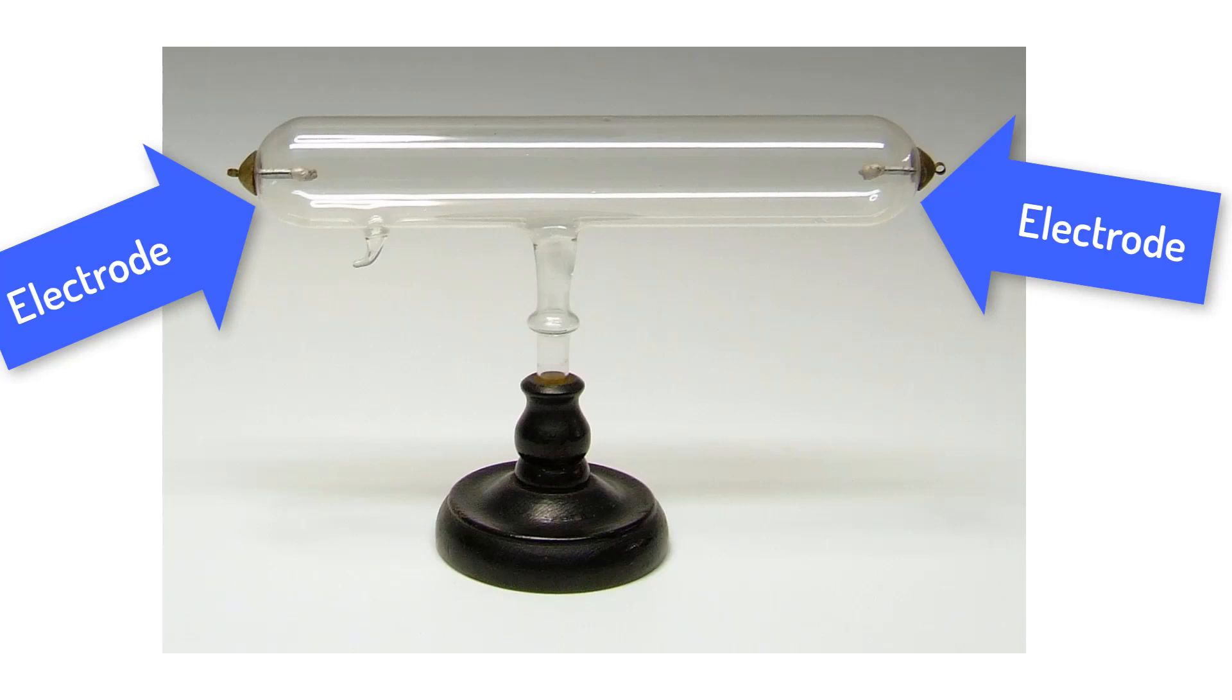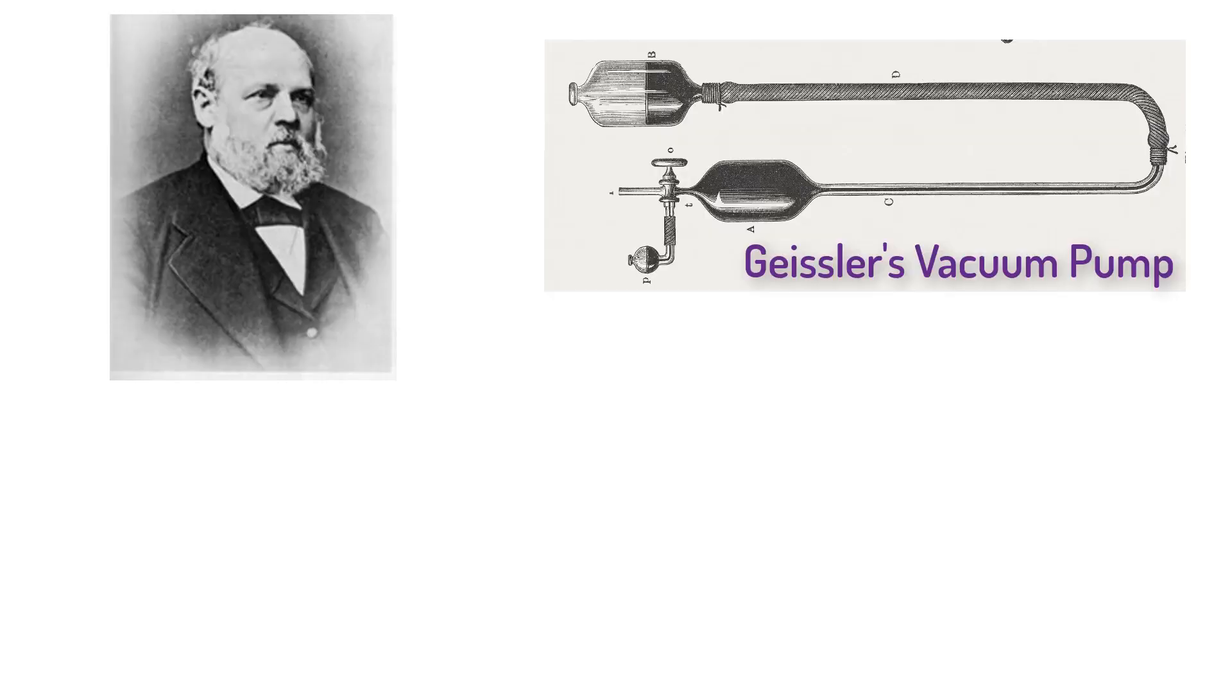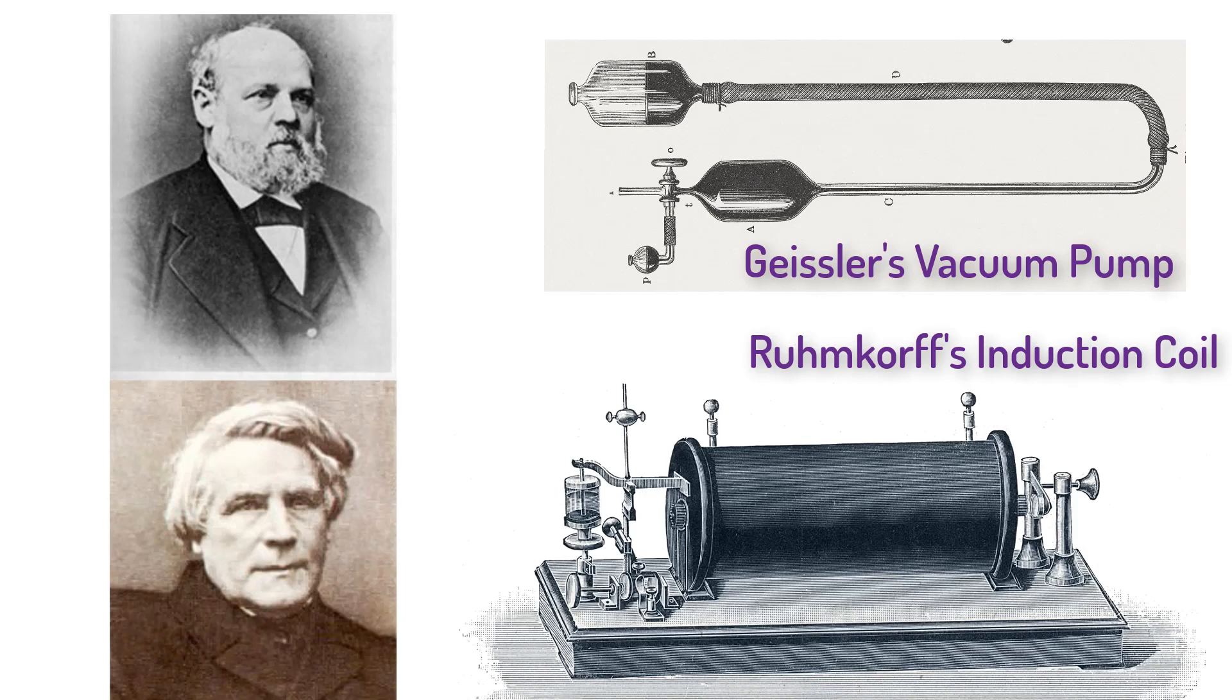Geissler tubes started pretty simply. They were skinny glass tubes with metal electrodes, platinum wires at either end. The tubes were mostly evacuated, had the air removed with a pump, and filled with trace amounts of gas or vapors. Geissler had just invented a mercury pump and his friend Rumkorf was selling a device called an induction coil that would produce very high voltages. So they had all the equipment needed to do this experiment.